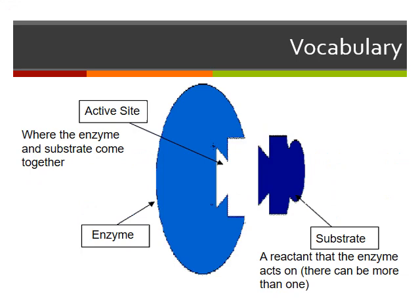Here we have the shape and structure of an enzyme — this blue, vampirish-looking Pac-Man structure is our enzyme. The enzyme acts on something called a substrate, which is the reactant that goes into the enzyme for the chemical reaction to occur. There can be more than one substrate that an enzyme works with. The active site is where the enzyme and the substrate come together, and the two tend to fit together relatively well — kind of like a lock and key, like they belong there.